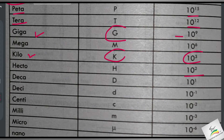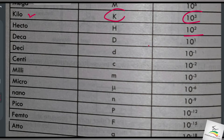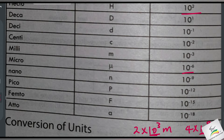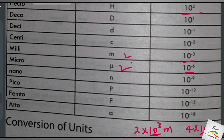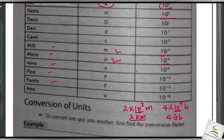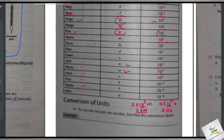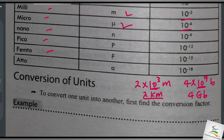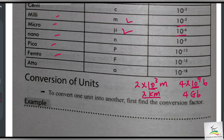The prefixes in order include: kilo, hecto, deca on the positive side, and on the negative side: deci, centi, milli, micro, nano, pico, femto, atto. These are the common prefixes used in measurement.